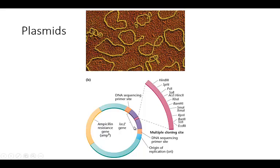The LacZ gene, when you put a particular substrate in, will make these colonies look blue. When you disrupt this gene by inserting something within this region, it can no longer produce the blue color, so those colonies will look white on a petri plate. This makes it easy to identify cells that have evolved resistance and can grow even in the presence of ampicillin — if they are blue, you know that would be the case. So you want to pick colonies that are only white. There are also sequencing sites and an origin of replication.